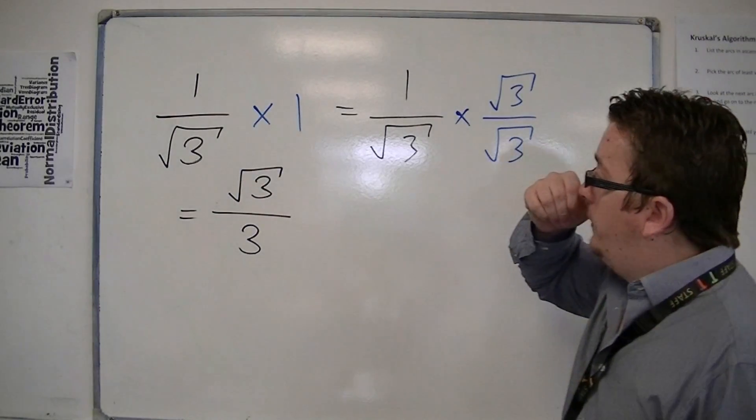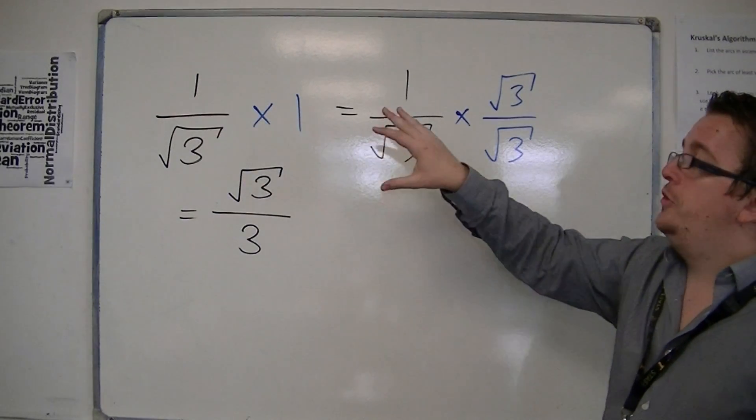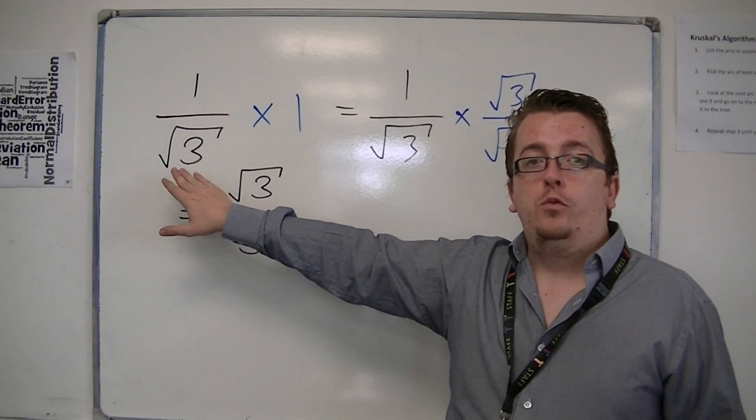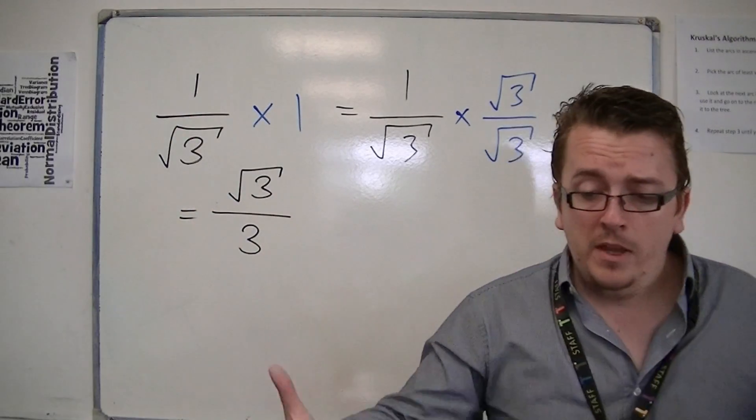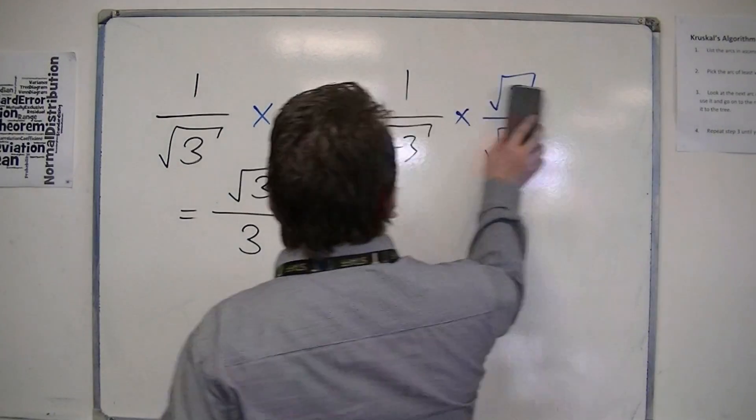So this is a very simple example of how you can rationalise the denominator with a simple fraction, like this. So, let's go through another example, let's try another one.